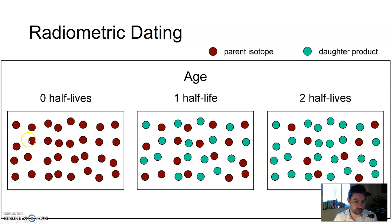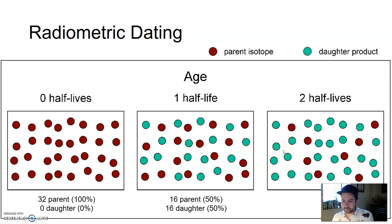Initially we started off with 32 uranium atoms. After one half-life, we have 16 uranium, 16 lead. After two half-lives, so it takes those 16 uranium, divide it in half again, so now I have 8 uranium and 24 lead daughter product atoms. That's half-lives. That's how we measure radioactive material.